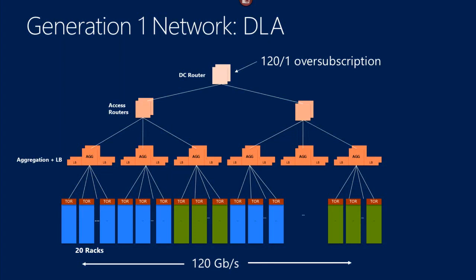When we have Azure applications, we've got disaggregated storage and compute, and compute that spreads across the data center, so there's a lot of east-west traffic that never leaves the data center. This is the original data center design, called DLA. It's a traditional three-tier networking architecture: data center routers at the top, access routers, and aggregation switches with load balancers. There are two of everything for redundancy. Underneath each access router there are three aggregation switches, and underneath each aggregation switch there are twenty racks. We put compute underneath two of those aggregation switches and storage under the third.